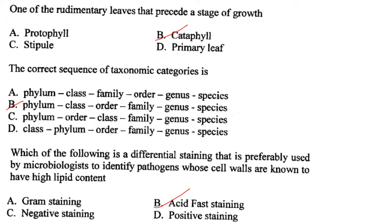A rudimentary leaf that precedes a stage of growth is called a cataphyll. Answer is option B.